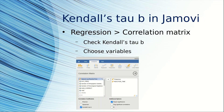I've talked a lot about Kendall's tau b — how do you do it? In Jamovi, choose Regression, then Correlation Matrix, and make sure to check Kendall's tau b instead of Pearson's. Choose your variables, and you've got it.